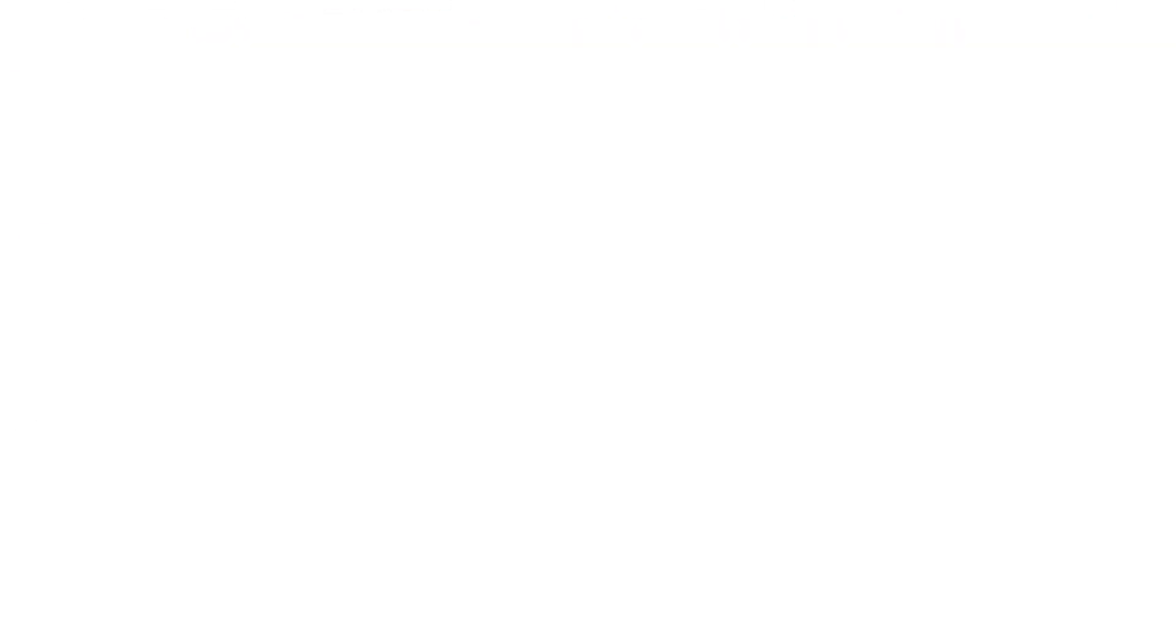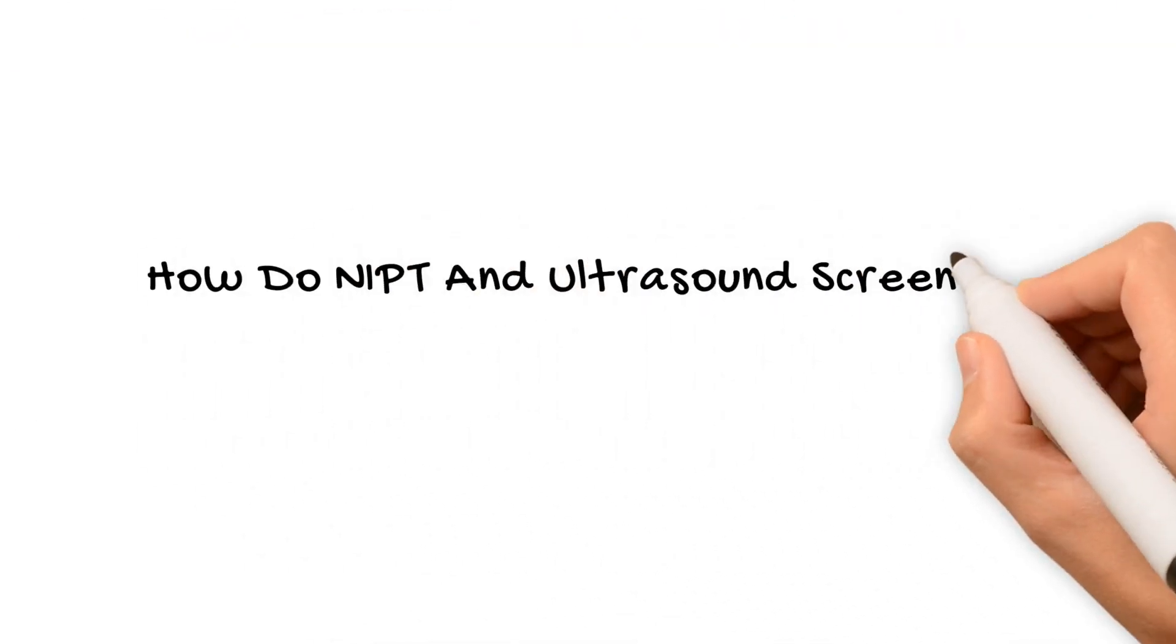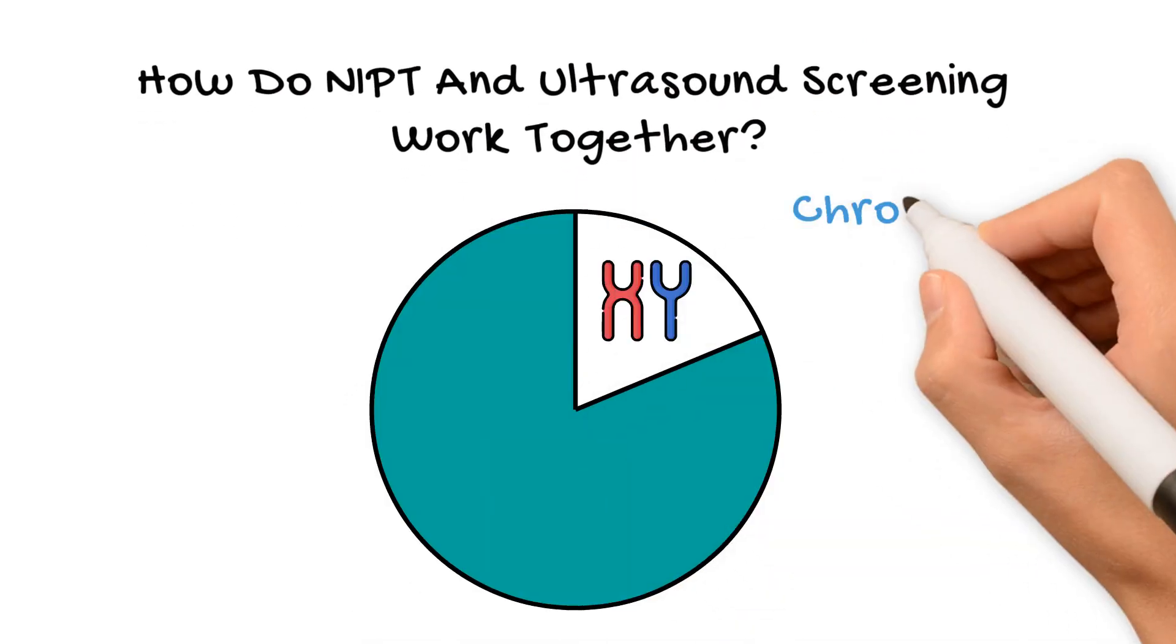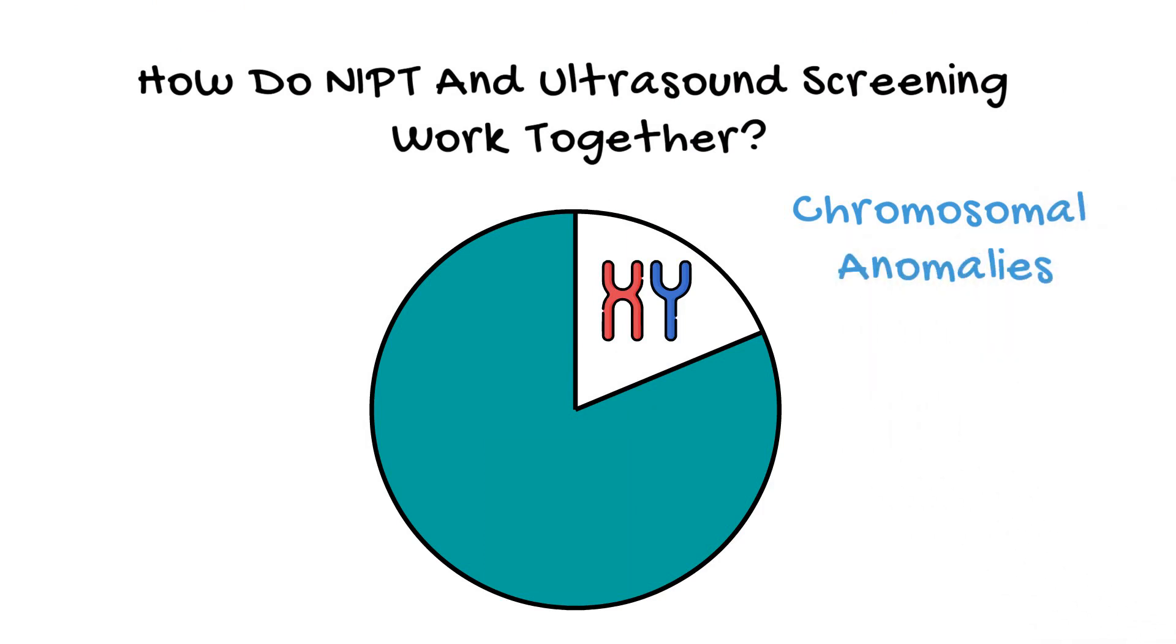How do NIPT and ultrasound screening work together? NIPT is effective for screening three chromosomal anomalies. However, the vast majority of anomalies known to us are actually structural, about 85%.